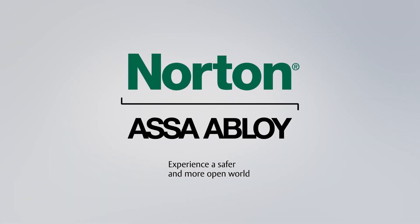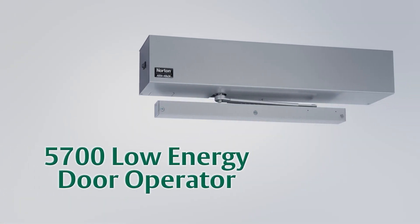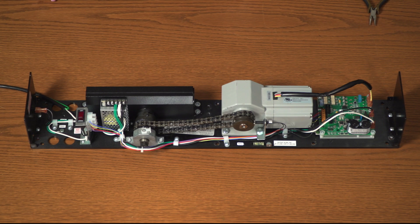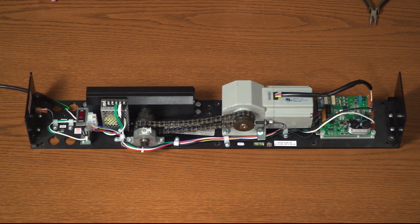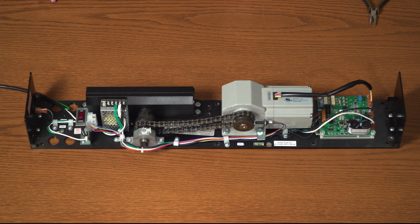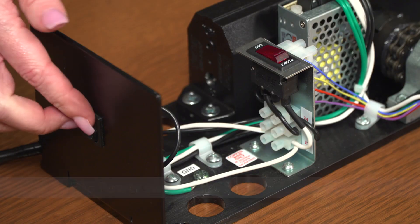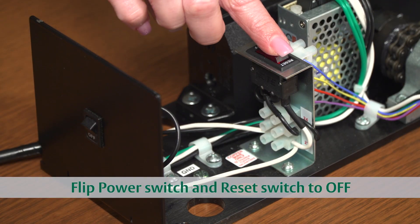The Norton 5700 series door operators can be easily converted from a pull to a push application. First, be sure the main power switch on the end cap is in the off position. The reset switch should also be set to off.